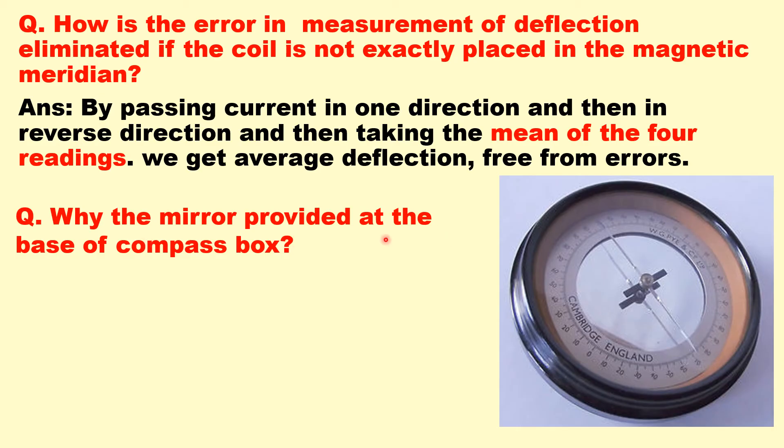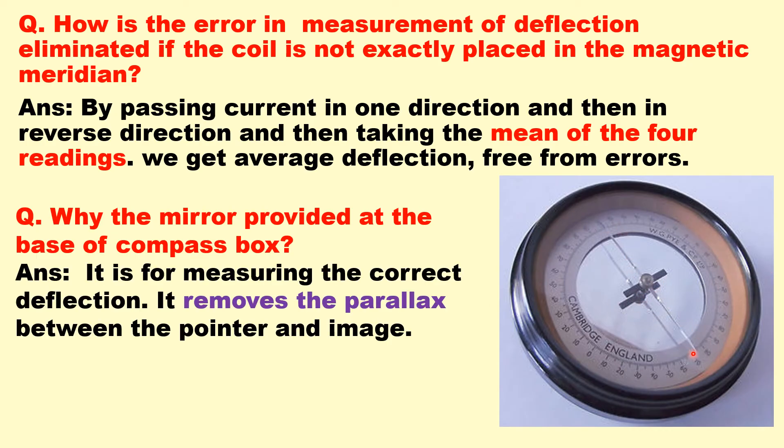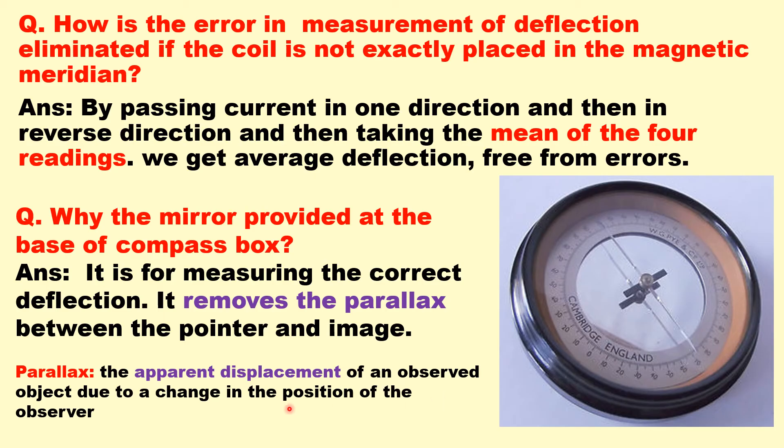Why is the mirror provided at the base of the compass box? If you see the compass box in your experiment you will see that there is a mirror at the base and we can see the images of the needle. It is for measuring the correct deflection because it removes the parallax between the pointer and image. Parallax means the apparent displacement of the object due to the change of the position of the observer. If you see the reading from some angle, this pointer and image will be at different positions so there will be error. You will have to see from the top so that this pointer and image should be at the same reading.